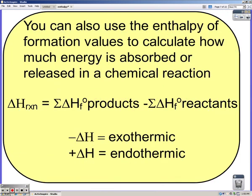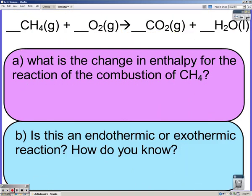You can also use those enthalpy of formation values to calculate how much energy is absorbed or released in a chemical reaction. Delta H of reaction equals the sum of Delta H of formation products minus the sum of Delta H formation reactants. When solving this equation, you have to multiply by the coefficients of each compound. If it's negative, it's exothermic; positive, endothermic. Because we're going to multiply by coefficients, we need a balanced equation. Pause the iPod and balance that.